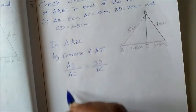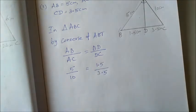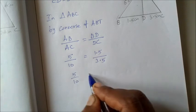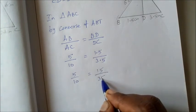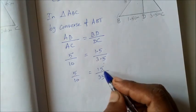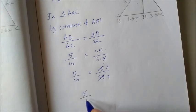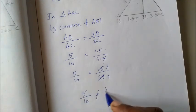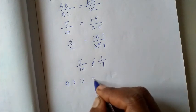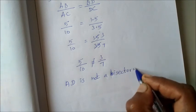AB is 5 divided by 10, equal to 1.5 divided by 3.5. So this is the result of BD by DC. Since both sides are equal, AD is the bisector of angle A of triangle ABC.